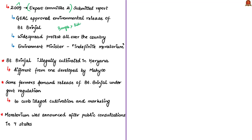Coming back to the editorial, the BT Brinjal illegally cultivated in Haryana was found to be a different variety from the one developed by Mahyco. Even though there is a government ban, some farmer groups have demanded the release of Mahyco's BT Brinjal and other GM crops under government regulations so that illegal marketing and cultivation can be curbed. The moratorium was imposed after the minister conducted public consultations in seven cities of India to discuss the environmental impacts of BT Brinjal for consumers and farmers. The meeting was attended by approximately 8,000 people — including farmers, scientists and activists — and many opposed the introduction of BT Brinjal into India.